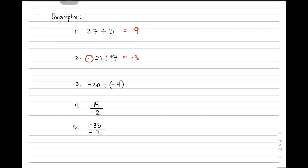Let's move on with item number 3. We have negative 20 divided by negative 4. The signs are the same — negative and negative. Therefore, the quotient is positive. Simplifying 20 divided by 4, that will give us the quotient of 5. Therefore, the correct answer is simply 5. I hope na sa first three examples natin, you can already get the process on how to divide integers.